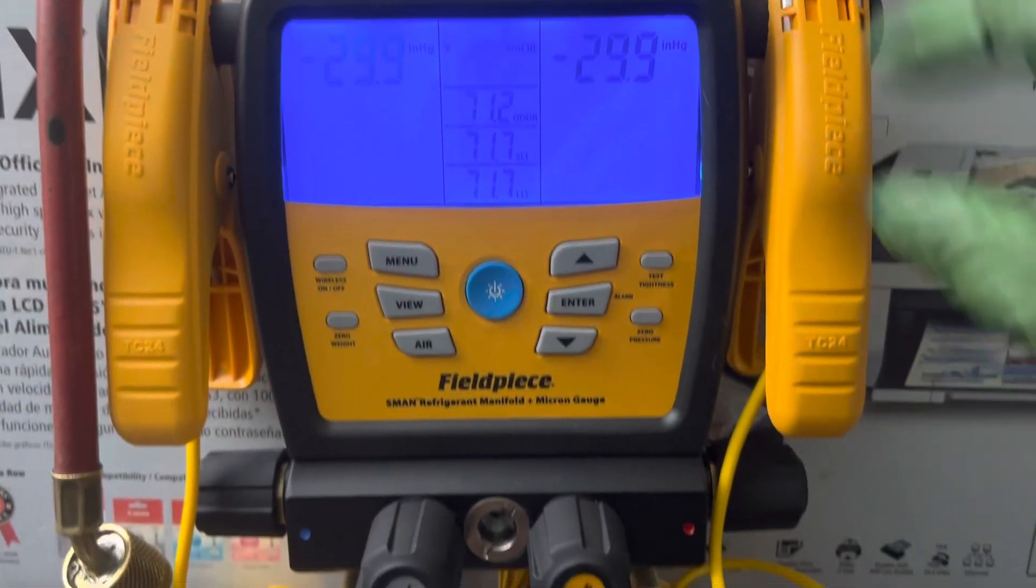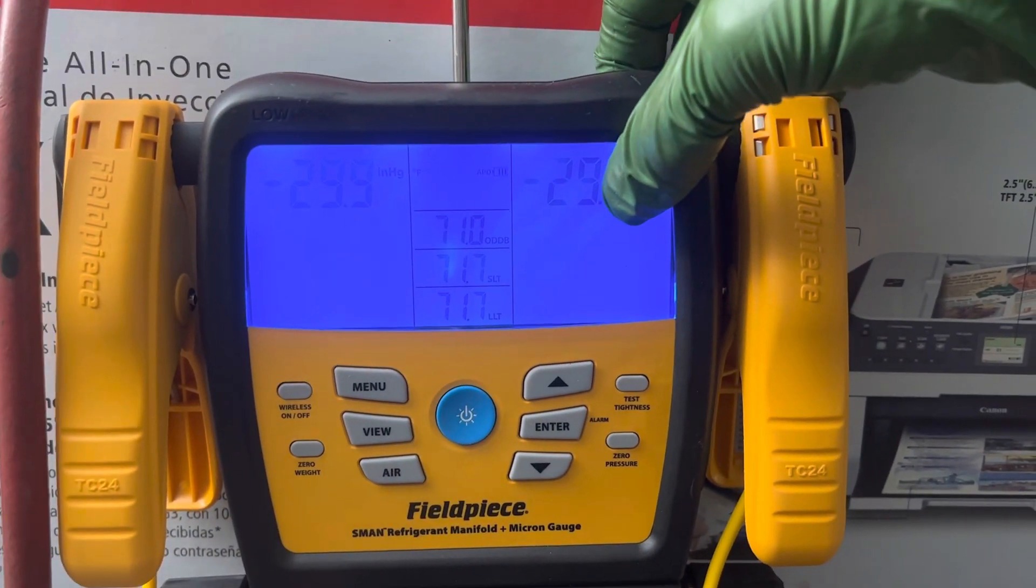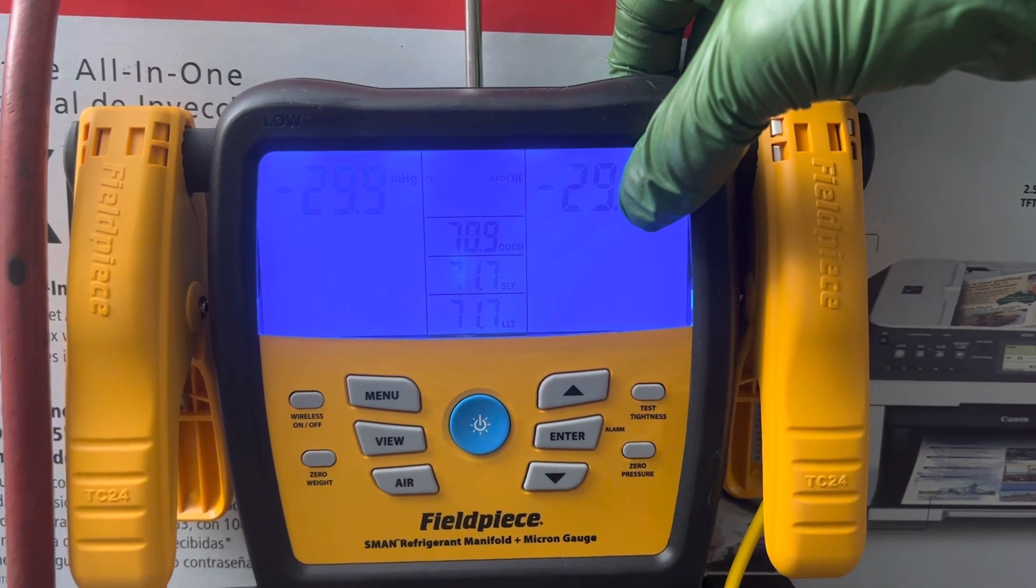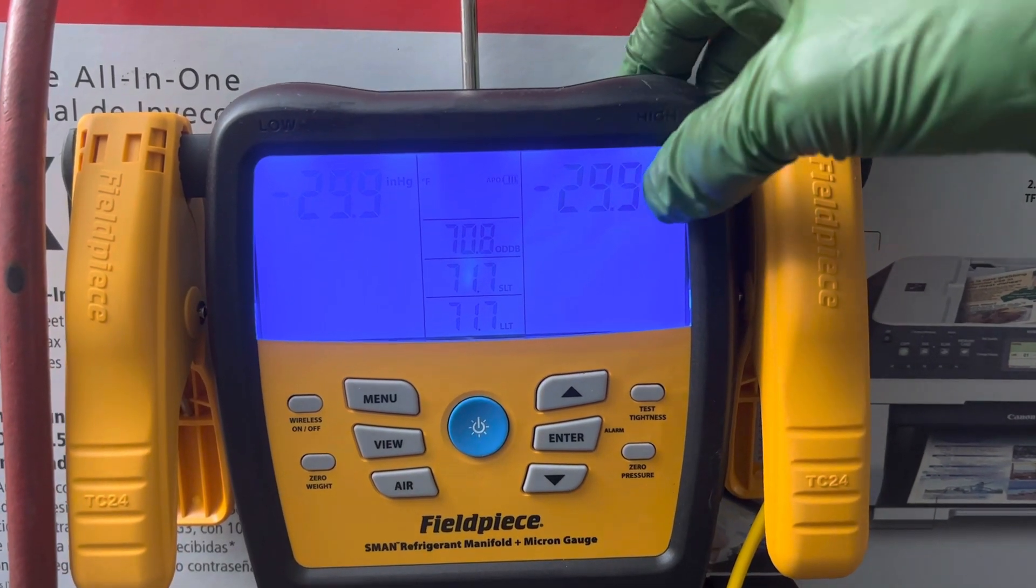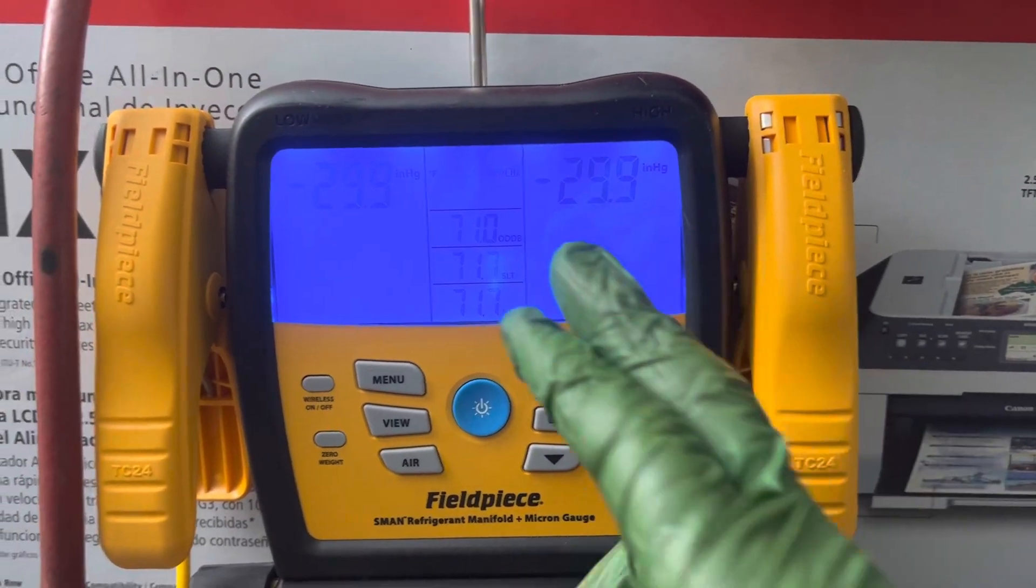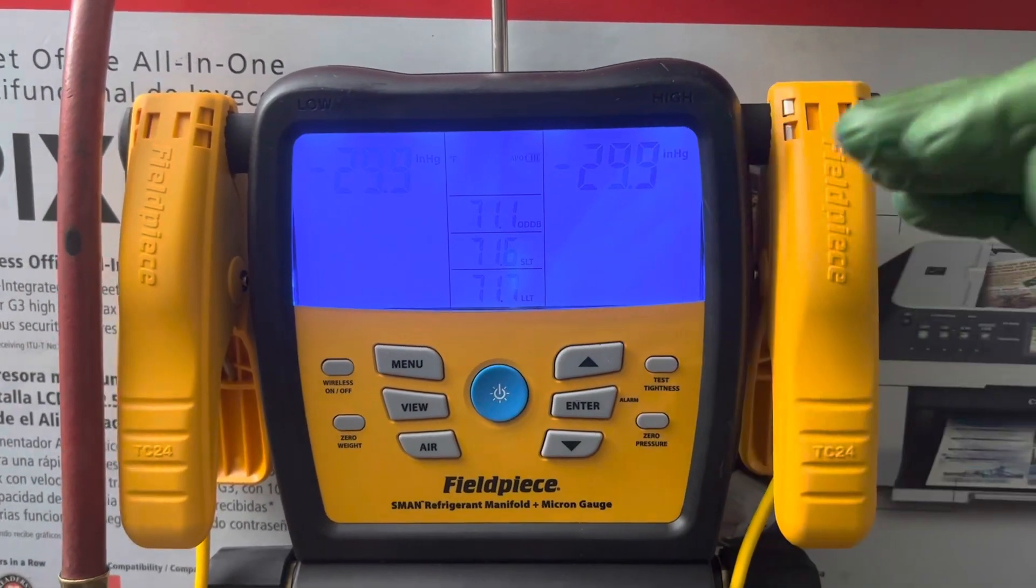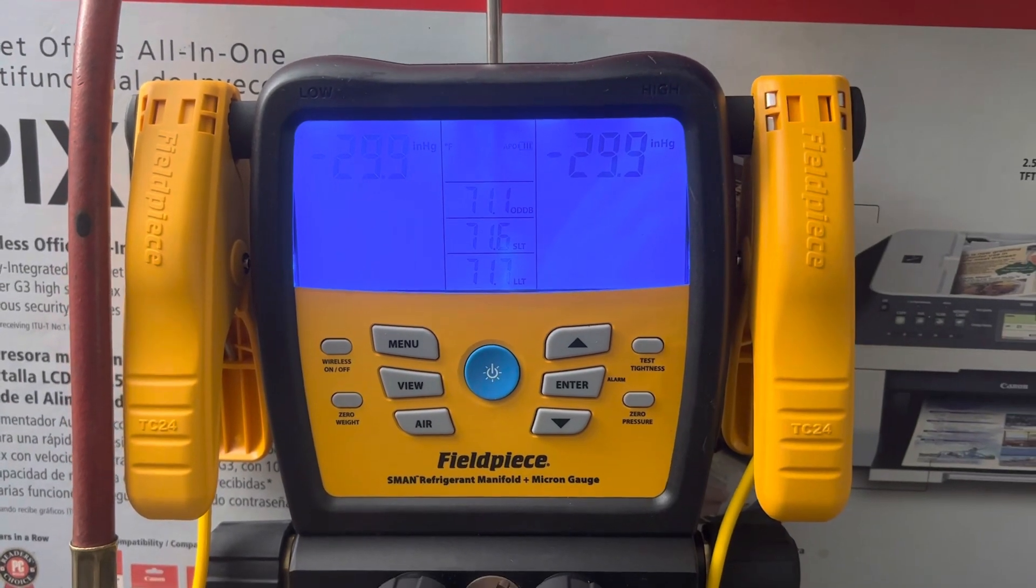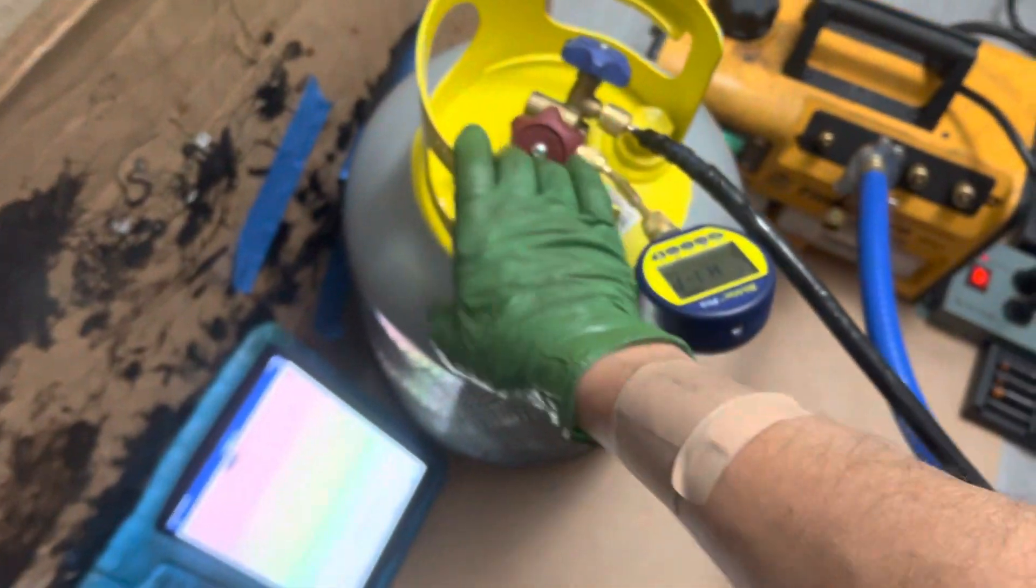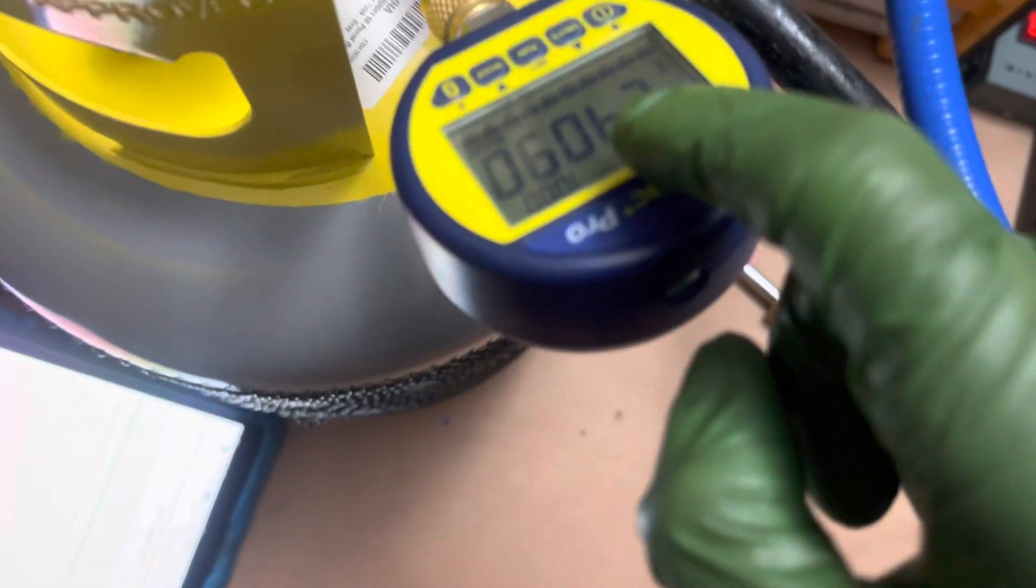Now, this is the limitation of analog gauges: 29 inches of mercury. But with the digital gauges you could go down to 29.9, but then after you get past 29.9, you start getting into microns. We'll be able to read microns pretty soon. Since this is a 50-pound container, this will take a little while. You can see there it goes, it's just starting to read something right now.